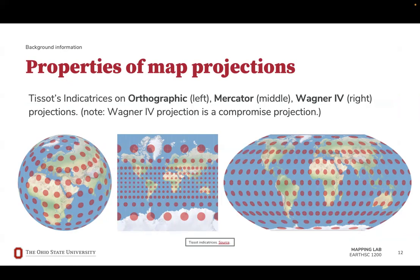On the left is an orthographic projection — we might think there is no distortion of the indicatrices because it looks like a globe, but as a 2D representation we can see that these circles are changing size and orientation. In the middle is the Mercator projection, where the circles remain circular but increase in size as they extend towards higher latitudes. On the right is a Wagner projection, which is a compromise, so the circles vary in size, shape, and distance from each other, but not as drastically as in the Mercator projection.